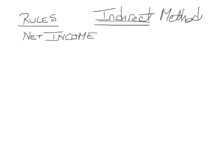Let's look at the very first line after net income, which says plus or minus the change in current assets. That little triangle means change — it's a delta. For those of you who have taken a physics class, you've seen that before; it means the same thing here. So, plus or minus the change in current assets. Let's just pick a current asset — accounts receivable. We have accounts receivable of $10,000 in year one, and then in year two we have accounts receivable of $8,000.